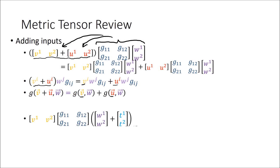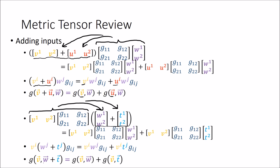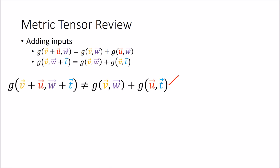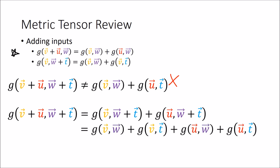We can also do the same thing for the right side of the metric tensor: if there's a vector sum there, we distribute to both vectors. In summation notation and in abstract form, we write a single function with a sum in the second input as a sum of two functions where each vector becomes a second input and the first input stays the same. I'll warn you again: you may get the urge to distribute both inputs at once — don't. To sort things out, apply these rules one at a time. Distribute the first input to get two terms, then distribute the second input in each of those, giving four output terms in total.